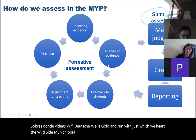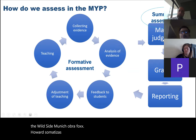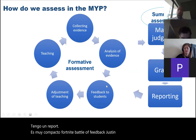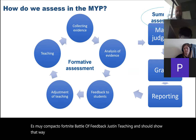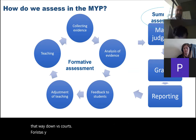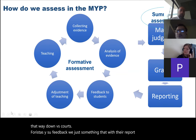That describes the formative task cycle. For a summative task, once we analyze the evidence, we make a judgment, then we grade, then we report, and then we go back into the formative circle of giving feedback and adjusting teaching. That's what the MYP wants us to do, and I think that's how we should be assessing whether you're an IB school, a British curriculum school, or a national system — it doesn't matter.